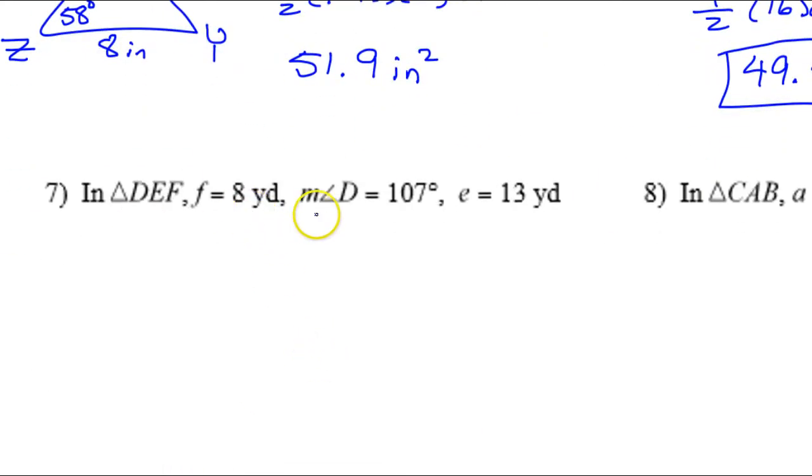And similarly, for number seven, we have two sides and the included angle. So if I want to find the area, I can do one-half one side times the other side times the sine of the included angle. So that is 49.7 square yards.